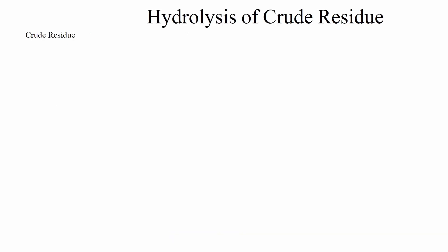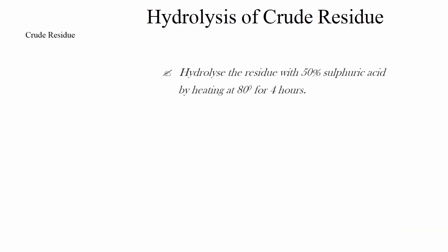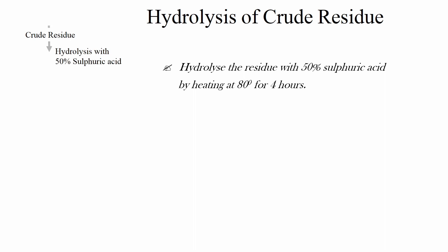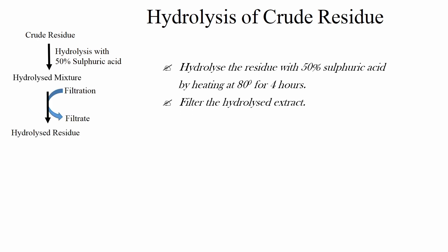Now, hydrolysis of the crude residue: hydrolyse the residue with 50% sulfuric acid by heating at 80°C for 4 hours, then filter the hydrolysis extract.